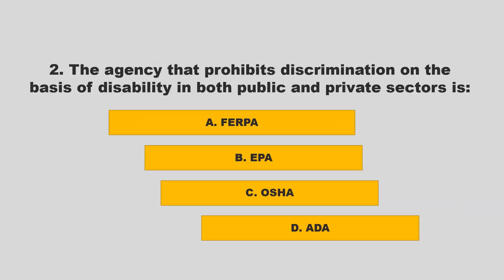The agency that prohibits discrimination on the basis of disability in both public and private sectors is: FERPA, EPA, OSHA, or ADA. If you chose D — ADA — you are correct.